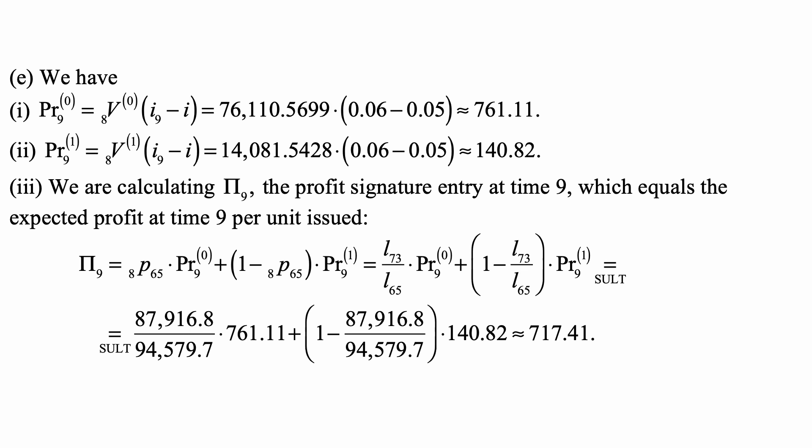Now for part 3, we're calculating π9, the profit signature entry at time 9, which equals the expected profit at time 9 per unit issued. So we need to multiply those two profits we calculated by the probability of being in state 0 for somebody who is at the very beginning of the policy.